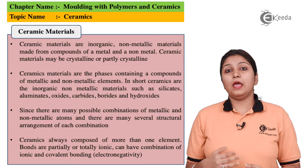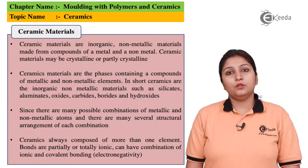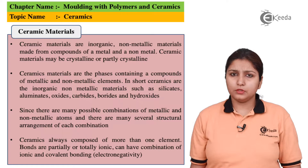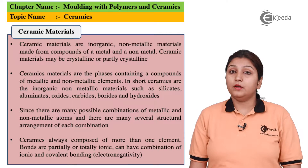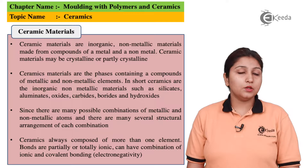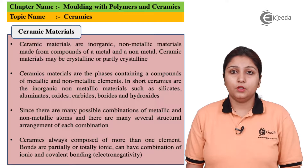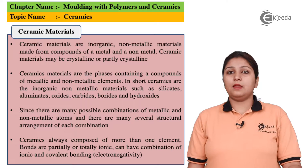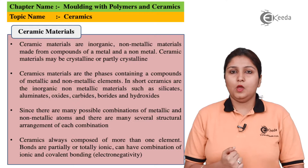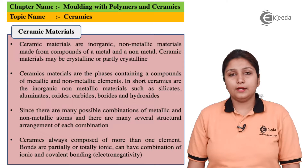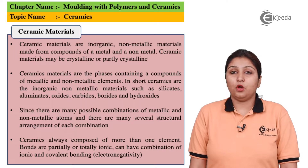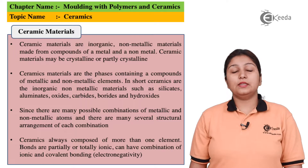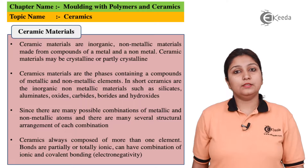Ceramics can be metallic as well as non-metallic material. They can be made easily by different processes that we are going to see. They are a combination of metallic as well as non-metallic substances. Aluminium, oxides, and carbides can be used as ceramics.